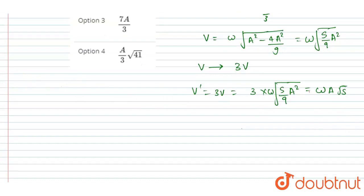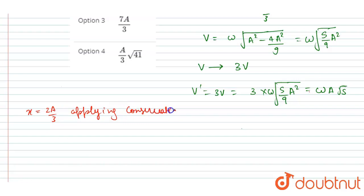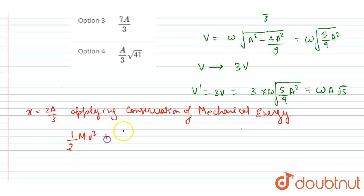Now I will conserve the mechanical energy at a distance of 2A/3. Applying conservation of mechanical energy: kinetic energy plus potential energy equals half·k·A'², where A' is the changed amplitude. Now we can put the values.